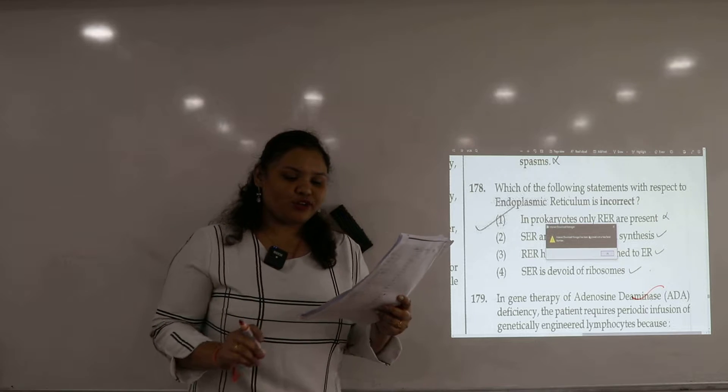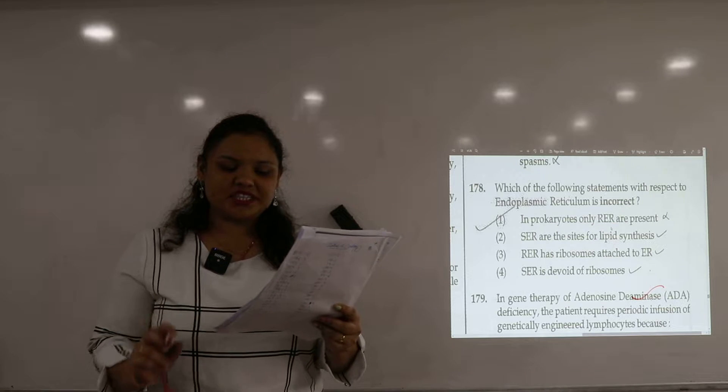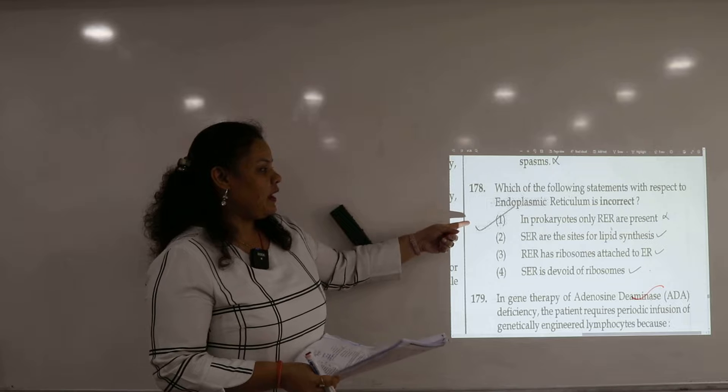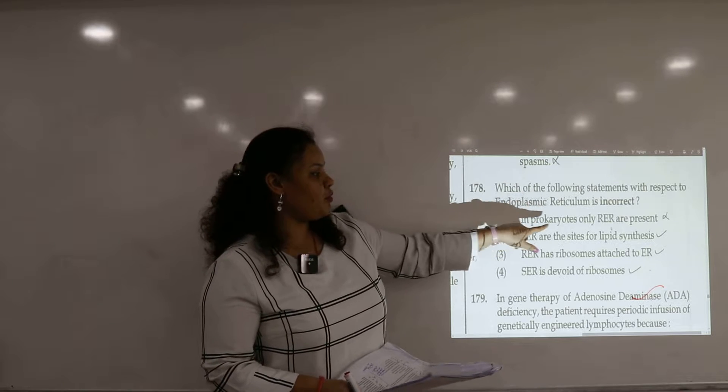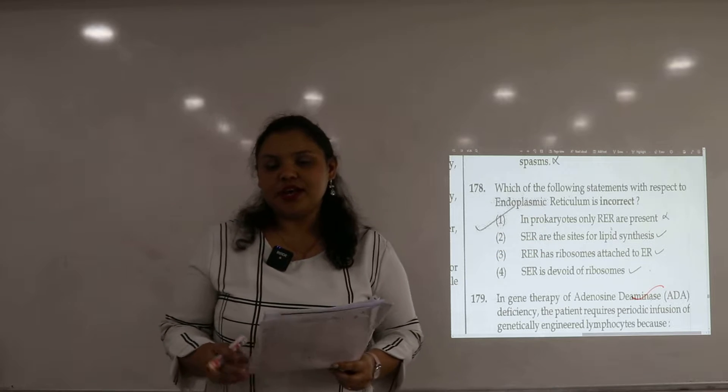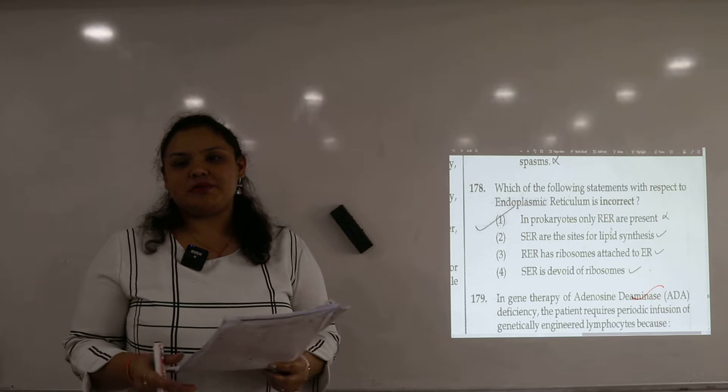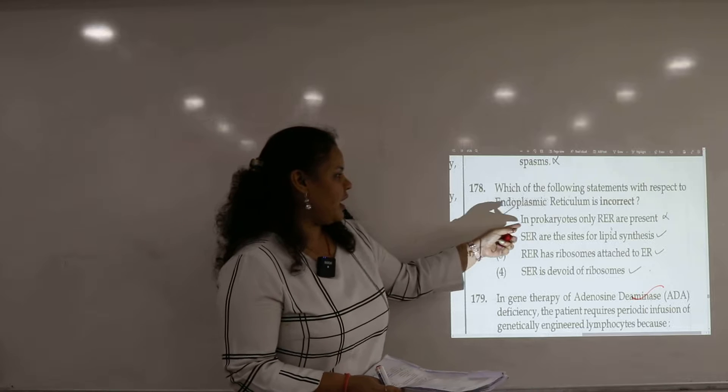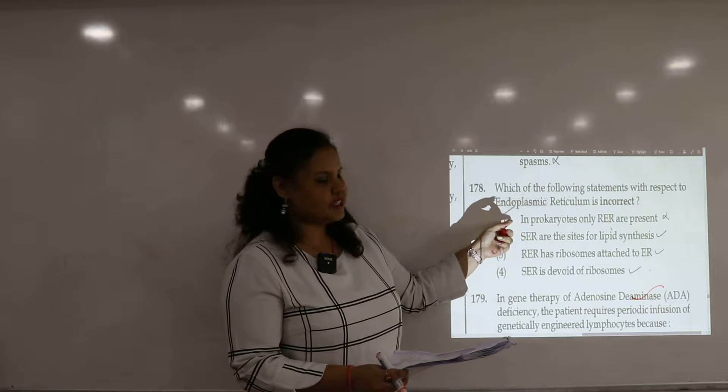Which of the following statement with respect to endoplasmic reticulum is incorrect? First, prokaryote is incorrect. In prokaryotes only RER is present. So we know that prokaryotes have membrane bound organelles are absent. So RER is present. This will be the option in this case.